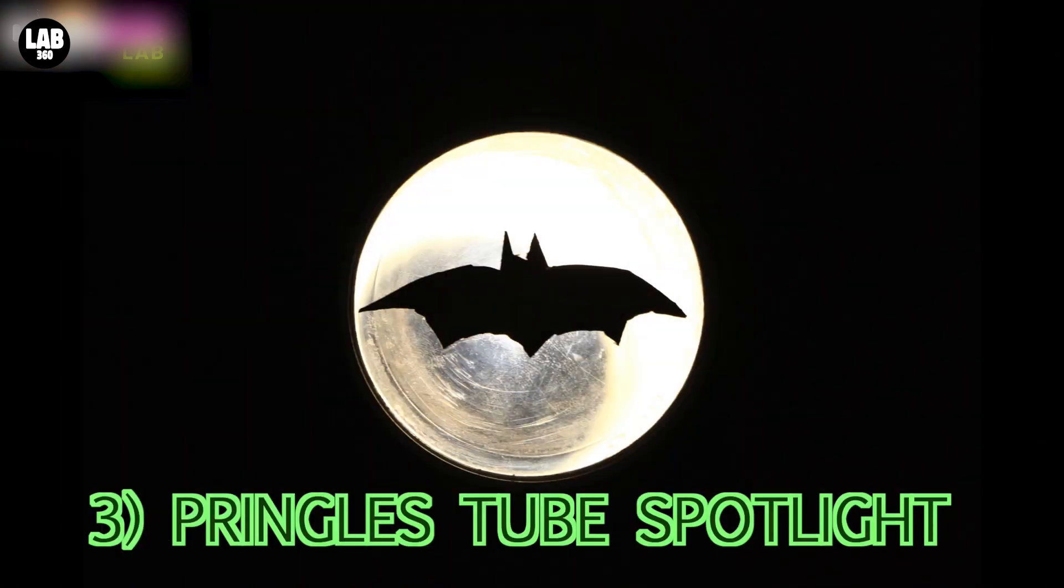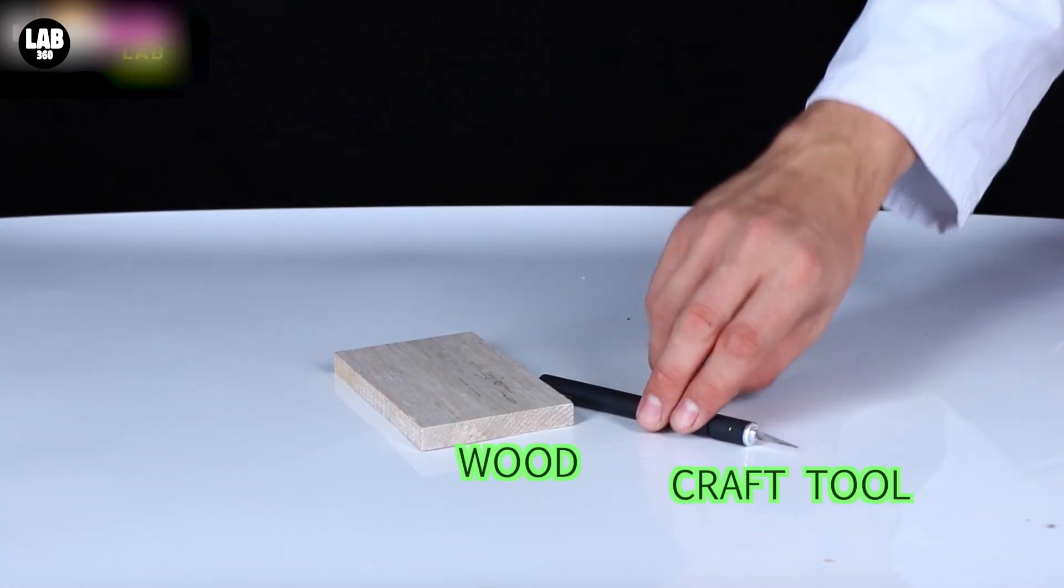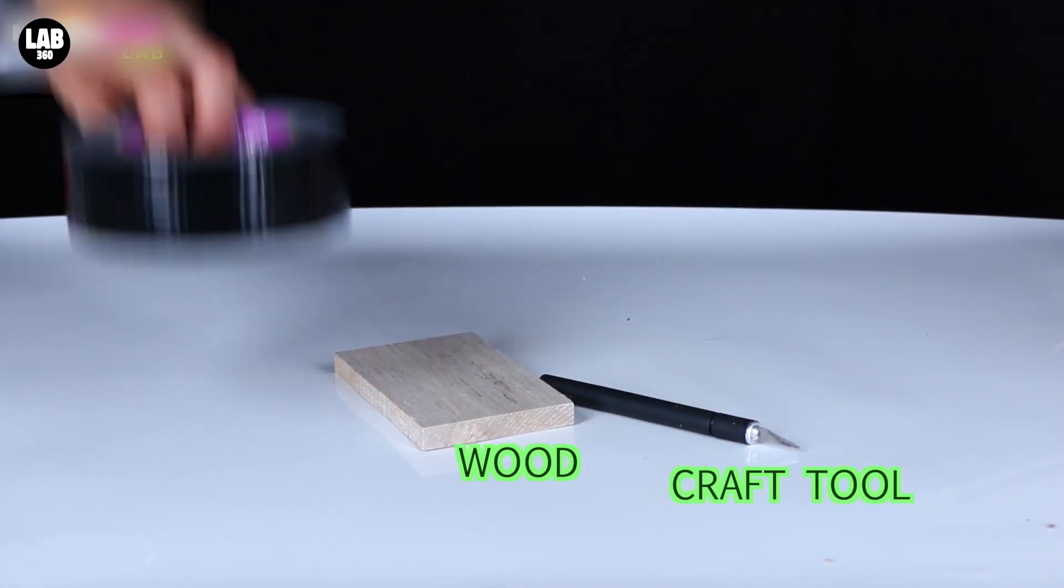And now it's time for the Pringles Tube Spotlight, or the bat signal, as I like to call it. You're going to need some wood, a crafting tool,